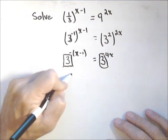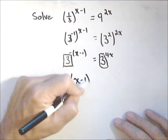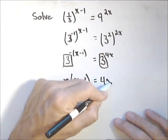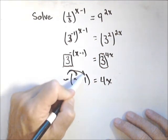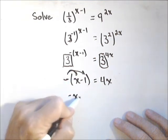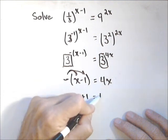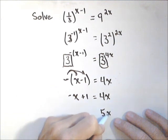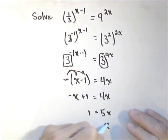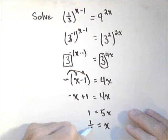So I'm going to set negative x minus 1 equal to 4x. And now solve. I distribute the negative, negative x plus 1 equals 4x. Add x to both sides, so I have 5x equals 1. Or finally, x equals one-fifth.